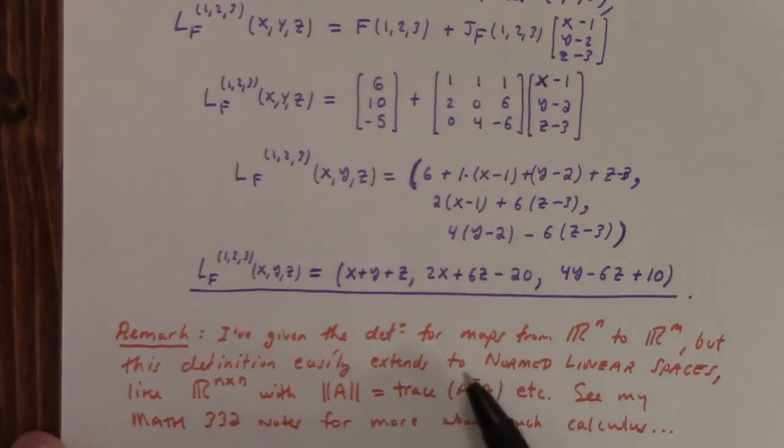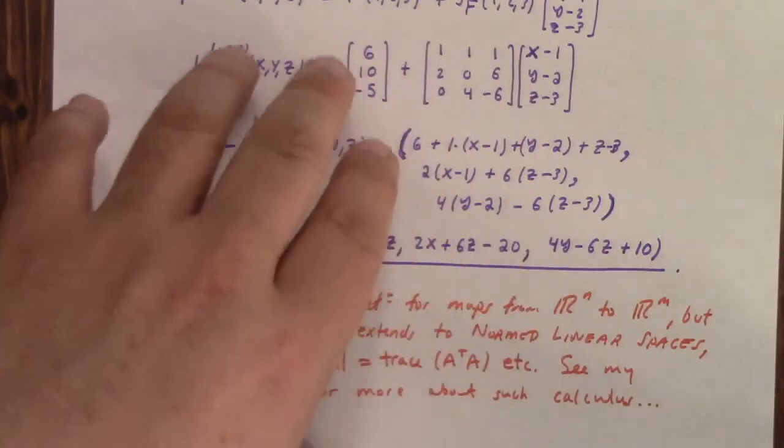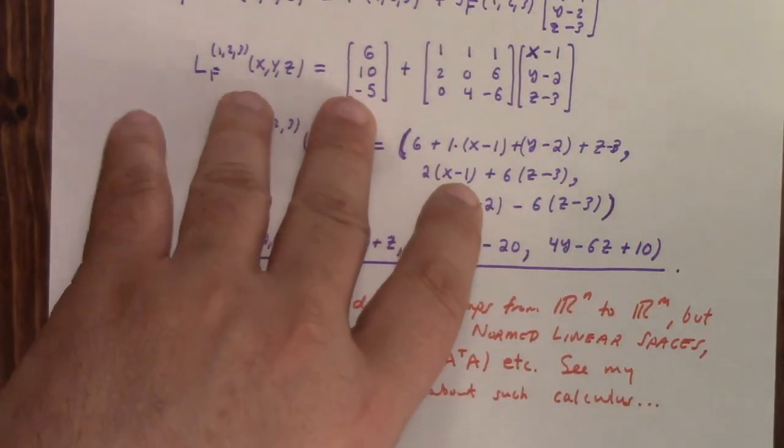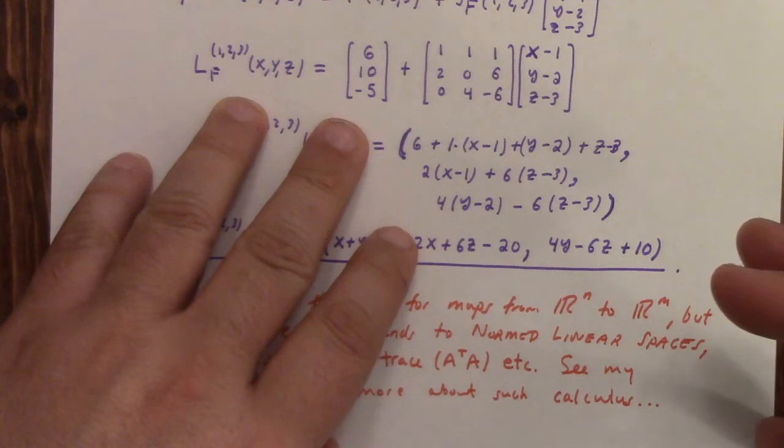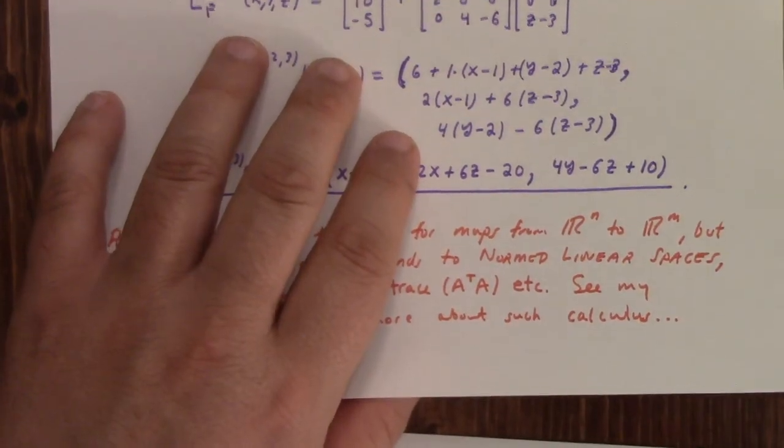And so I've given the definition, by the way, for maps from R^n to R^m. But in fact, this definition easily extends to normed linear spaces like n by n matrices where the norm is given by this. And anyway, I have more to say about that in my 332 notes if you're interested. So anyway, next up, of course, is a little bit on intuition for the inverse function theorem.